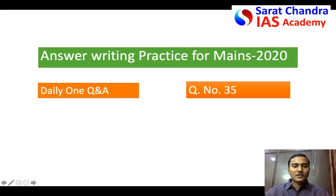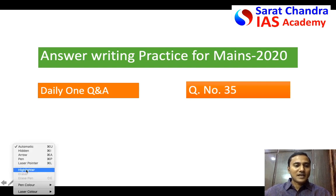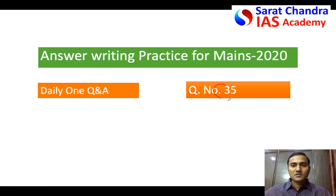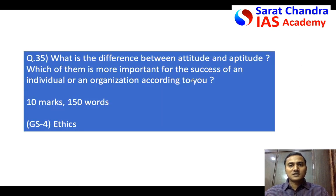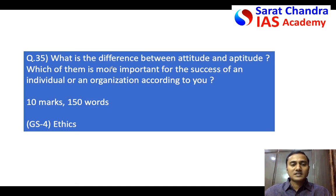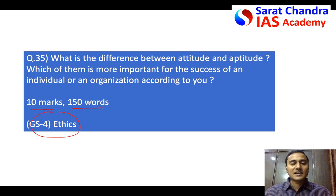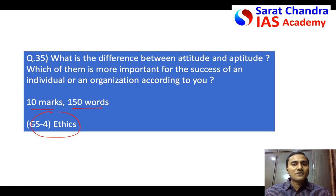Hi friends, today we will look at ethics question 35 that I gave yesterday. This falls under the aptitude versus attitude part of the syllabus of ethics GS4. As it is a 10-mark question, be precise at exactly what they have asked. Write a short introduction and short conclusion. In this kind of question where they ask you specific terms like attitude, value, or moral, along with defining them in your own words, also give some good examples.